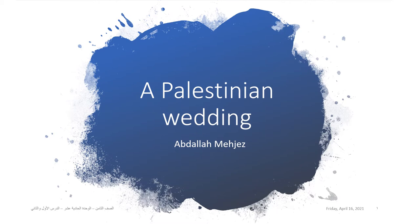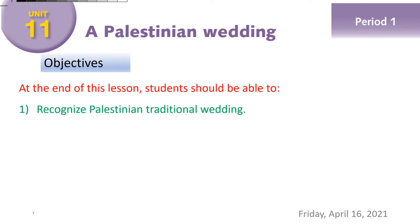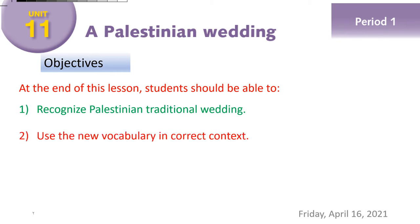As usual, we need to identify our objectives. The first objective is: recognize Palestinian traditional wedding. أيضاً, عندي الهدف الأول أن أتعرف على الحفل الزفاف التقليدي الفلسطيني. Second: use the new vocabulary in correct contexts. أن أستخدم الكلمات الجديدة في سياق صحيح.